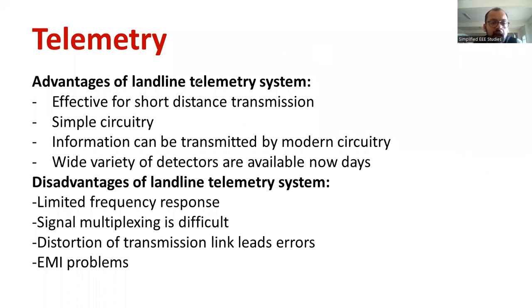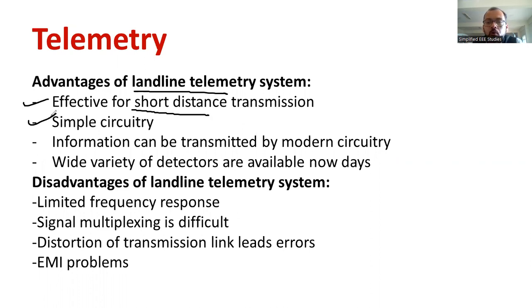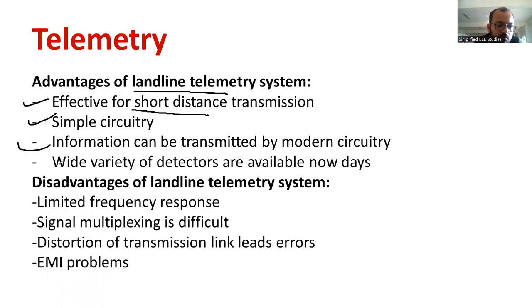Now let's discuss the advantages of the landline or DC telemetry system. It is suitable for short distances, and the circuit is simple. There is no modulation complexity, and we do not need to create a dedicated channel between transmitter and receiver. Information can be transmitted using modern circuitry, advanced power lines, and a wide variety of indicators are available. For short distance applications, the landline telemetry system is very convenient.